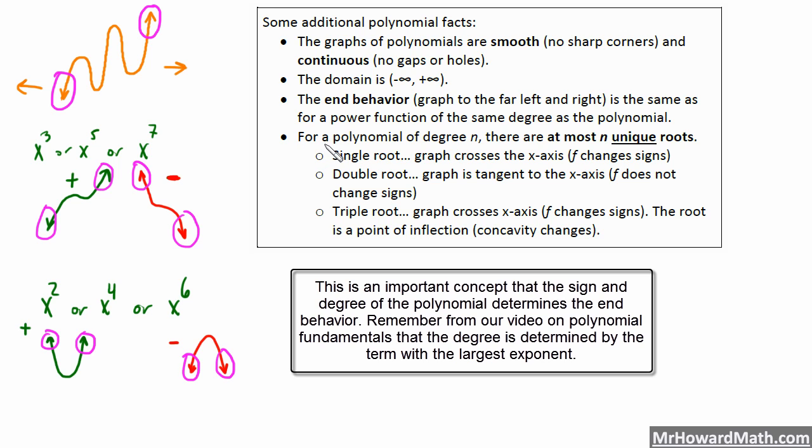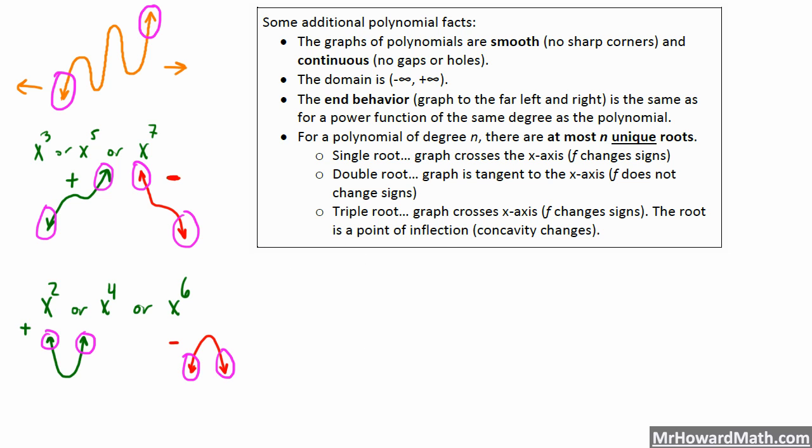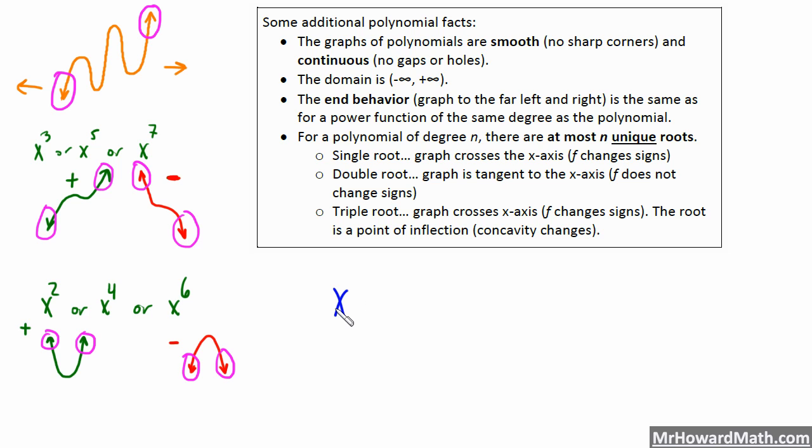So next bullet point here. For a polynomial of degree n, there are at most n unique roots. So in other words, if we have a polynomial that is x to the 4th, so it's a 4th degree polynomial, it can have at most 4 unique roots.